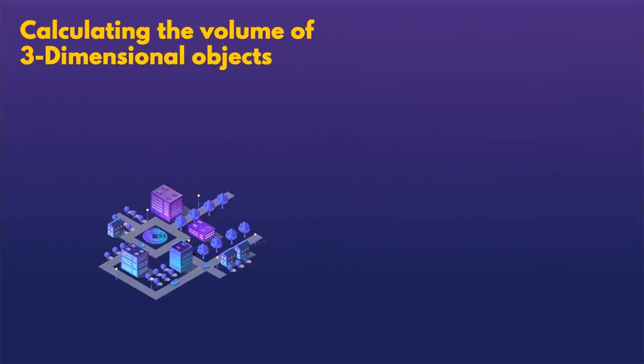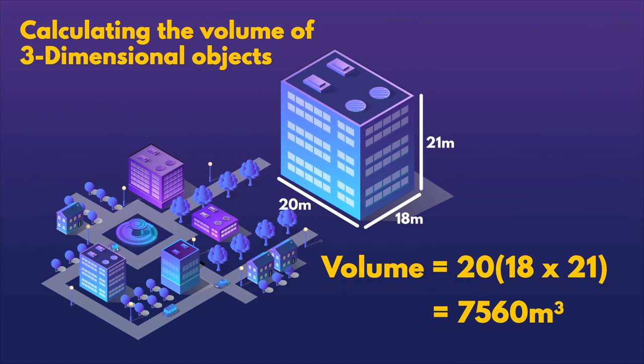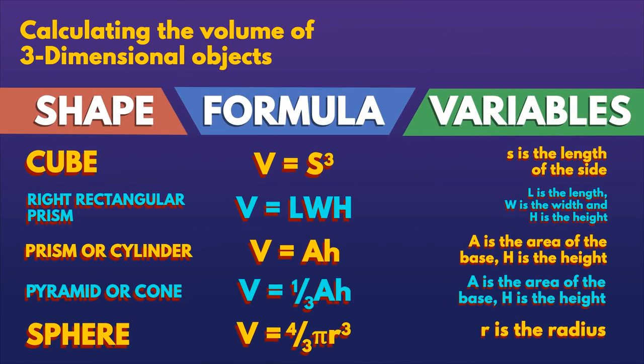The volume of solids is expressed in cubic measurements such as cubic meters. Just as with area we must follow a set of formula to calculate the volume of 3D shapes. For prisms and cylinders remember that the volume is the cross section times the length. We can go on to calculate the volume of more complex shapes knowing the right formula.